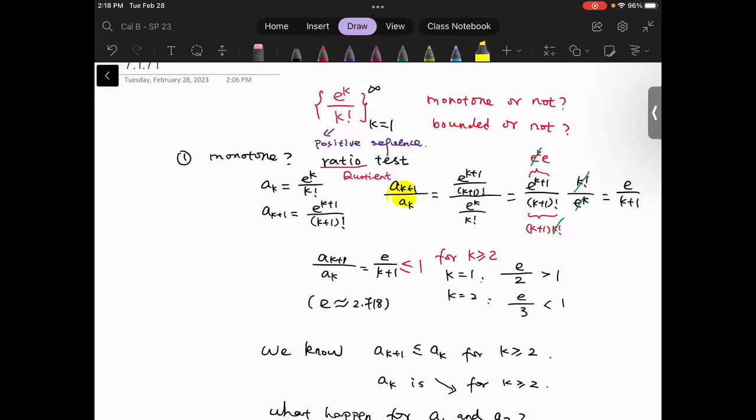Some algebra. Notice that the (k+1) factorial can be written as (k+1) times k factorial. e to the (k+1) power will be e^k times e. From here, we can do some cancellation. k factorial and e^k will be eliminated.